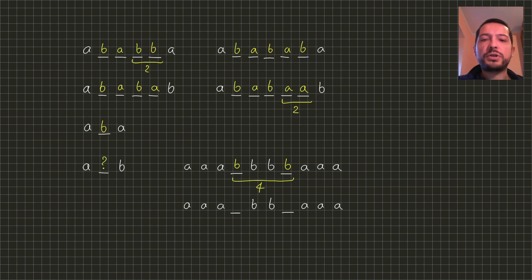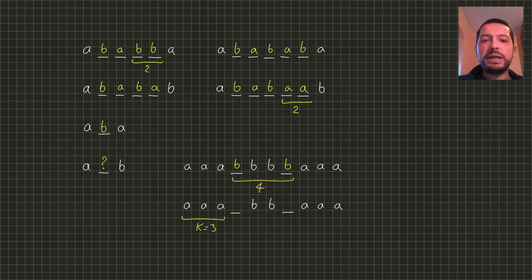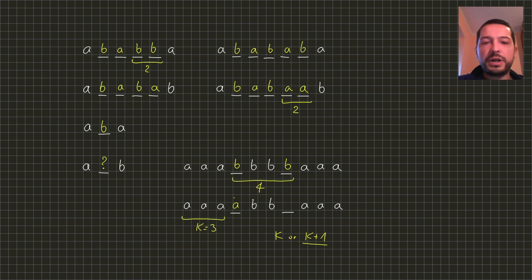So let's suppose we have such a sequence and let's denote by K the length of the longest fragment. In our case K will be equal to 3. What I claim is that the optimal answer for such a sequence is either K or K plus 1. Obviously the answer must be at least K because we already have a fragment of such length, and it's easy to construct a solution of size K plus 1: we just fill each gap with the letter to the left of it, increasing the length of each fragment except the last one by exactly 1.